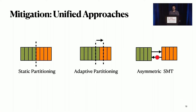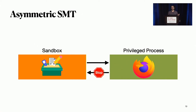We also propose Asymmetric SMT, a novel security approach that allows communication from a low-security thread to a high-security thread, but not the other way around. One example where this is useful is sandboxing in web browsers. While it is not secure to leak information from the browser thread to the sandbox thread, it is safe to leak information from the sandbox thread to the browser thread. We utilize this by allowing the unused resources from an untrusted thread to be securely utilized by the trusted thread.